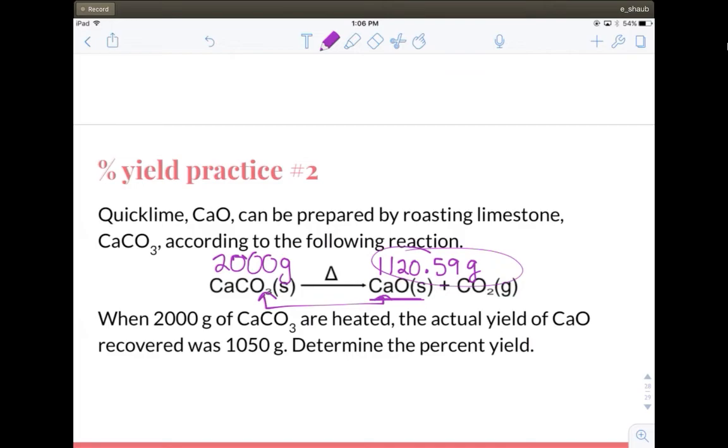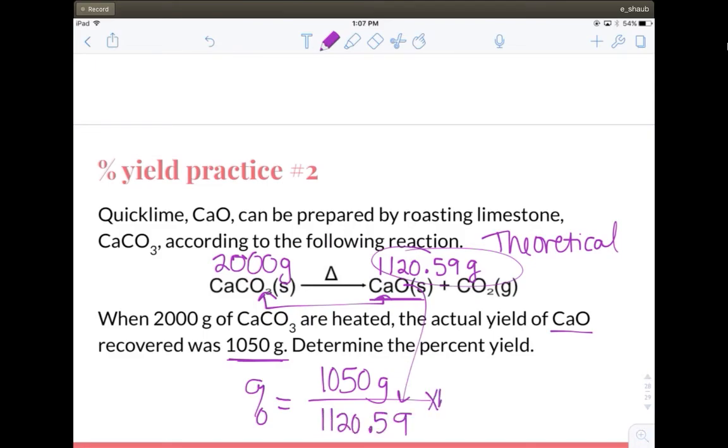So I tell you the actual yield of calcium oxide recovered is 1,050. So the percent yield would be my actual 1,050 grams over the theoretical, which you calculate times 100. And when you do that, you get a 93.7 percent yield.